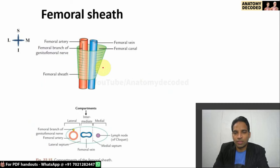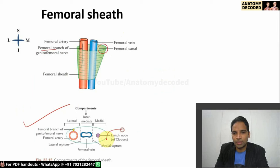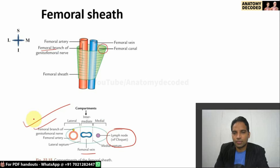In the schematic diagram of the femoral sheath viewed from medial to lateral: there is an empty space, then the vein and artery along with the femoral branch of the genitofemoral nerve. The medial-most compartment also contains a lymph node — the lymph node of Cloquet — along with the femoral vein and femoral artery.